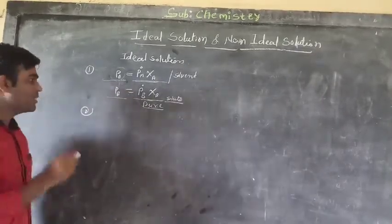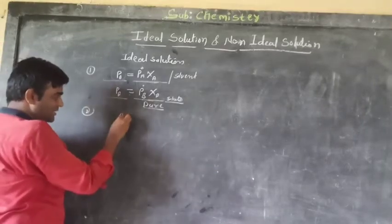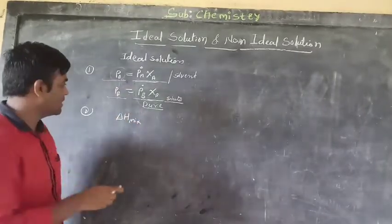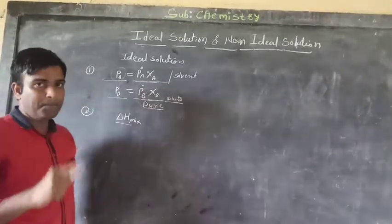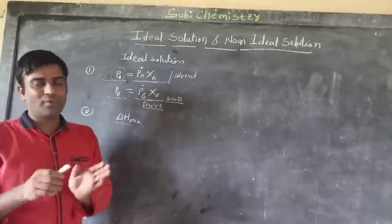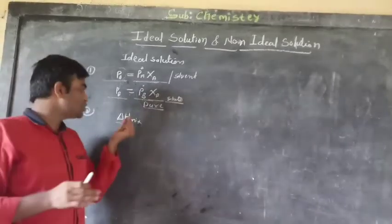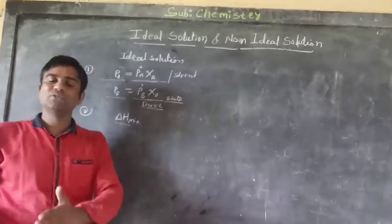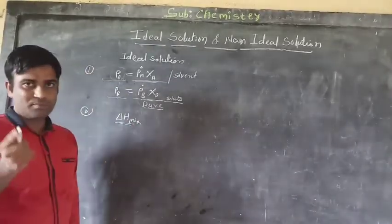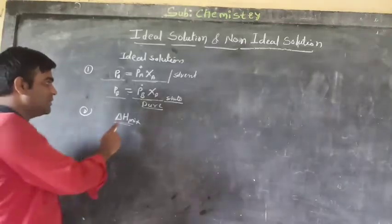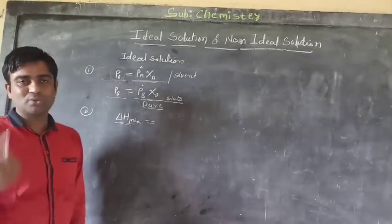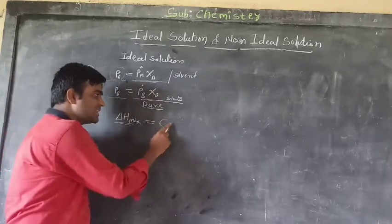Second condition is delta H mixing — the change in enthalpy when mixing solvent and solute. When solvent and solute are mixed, the enthalpy changes. But in an ideal solution, there are no changes — delta H mixing is equal to zero.